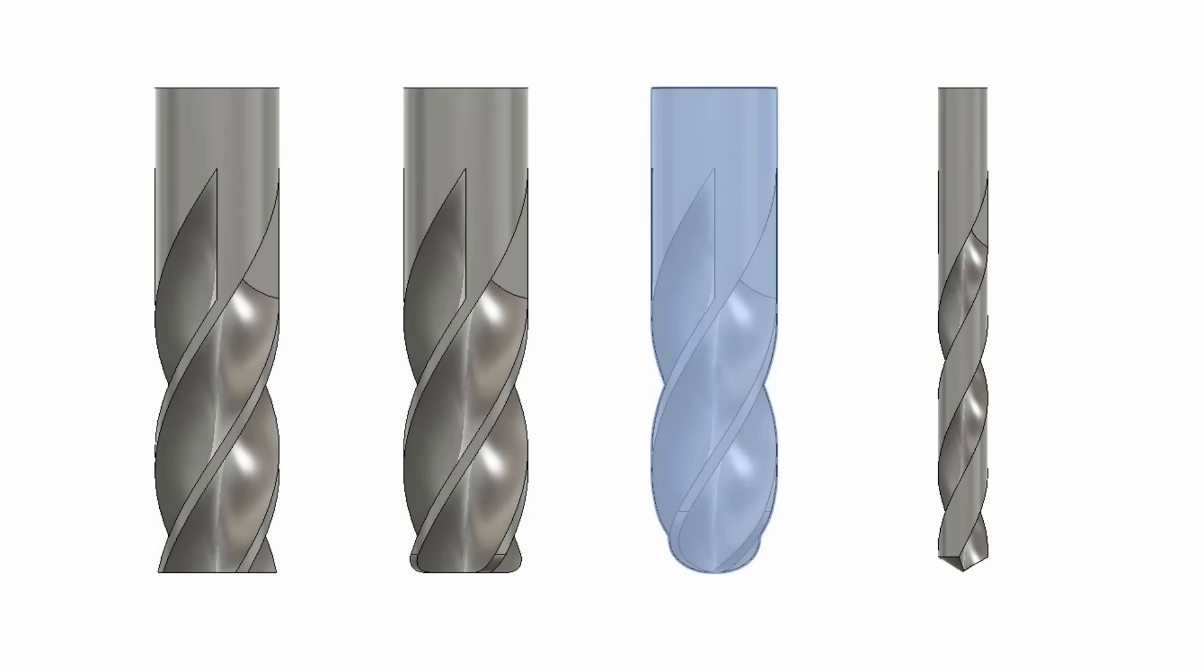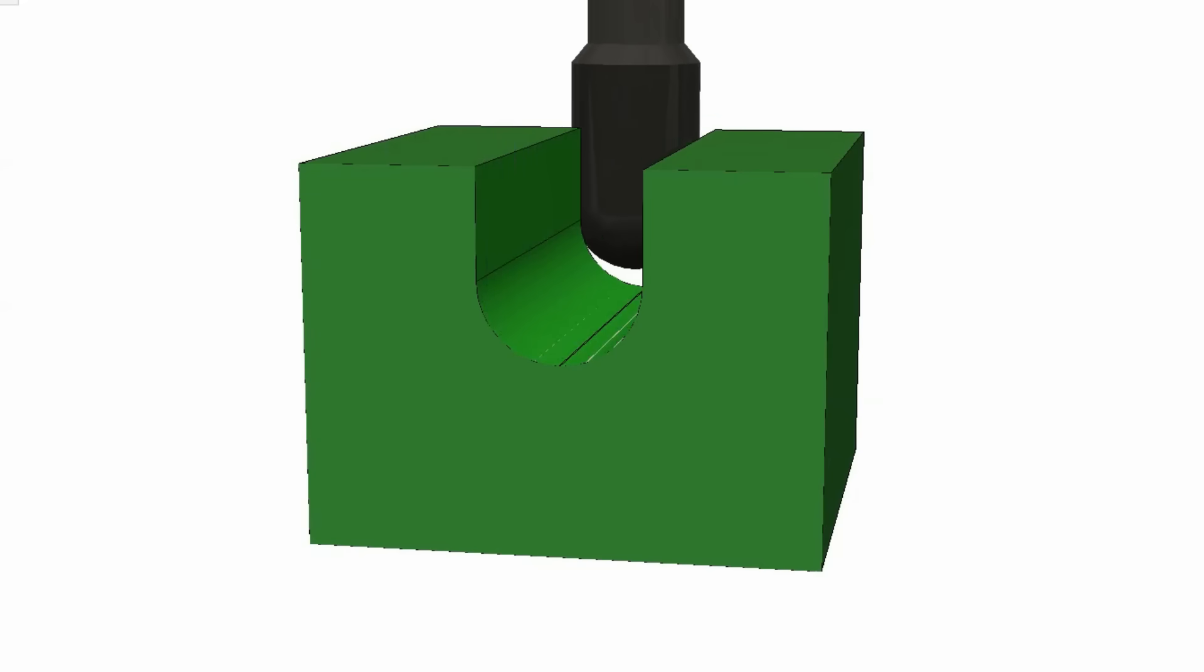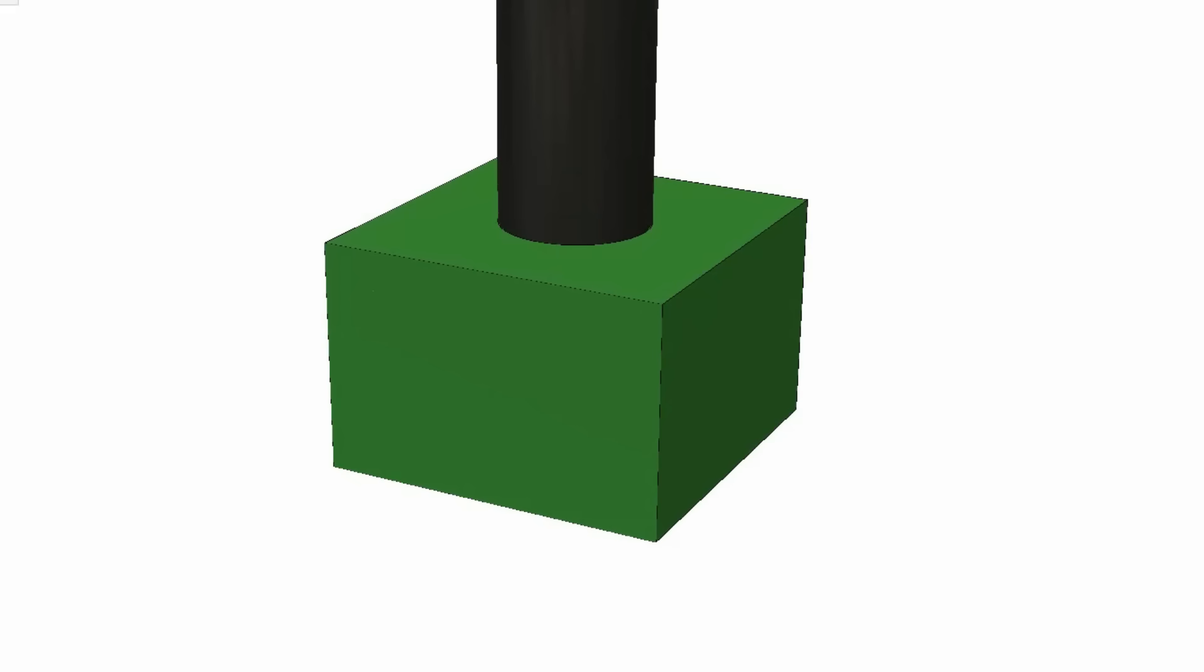The ball end mill is good for surfacing complex 3D shapes as well as machining larger bottom floor radii. And finally the drill which is only useful for making vertical holes in parts.